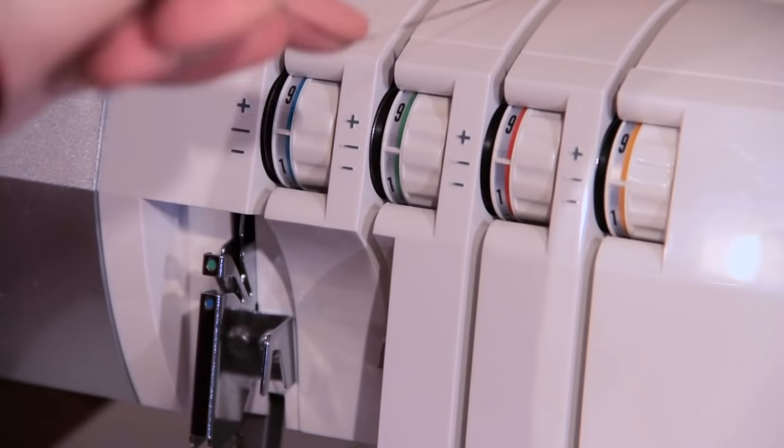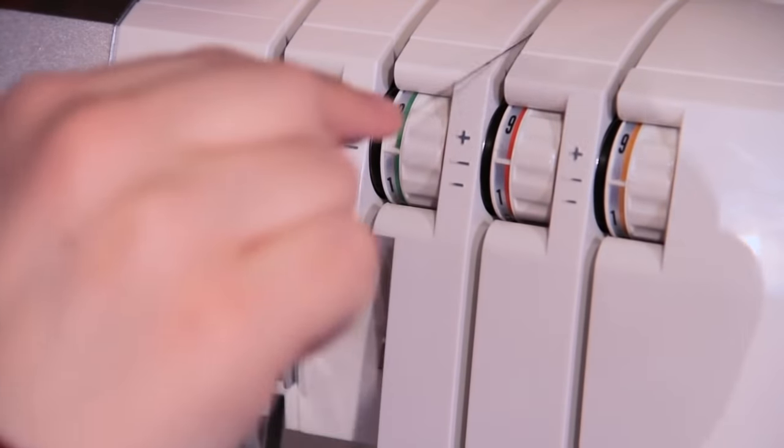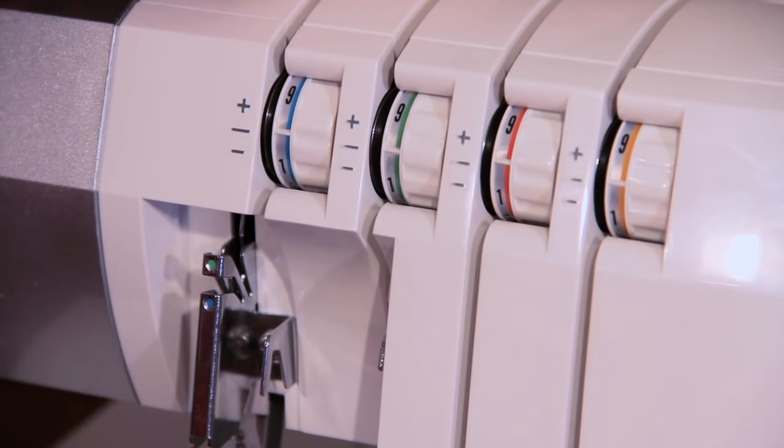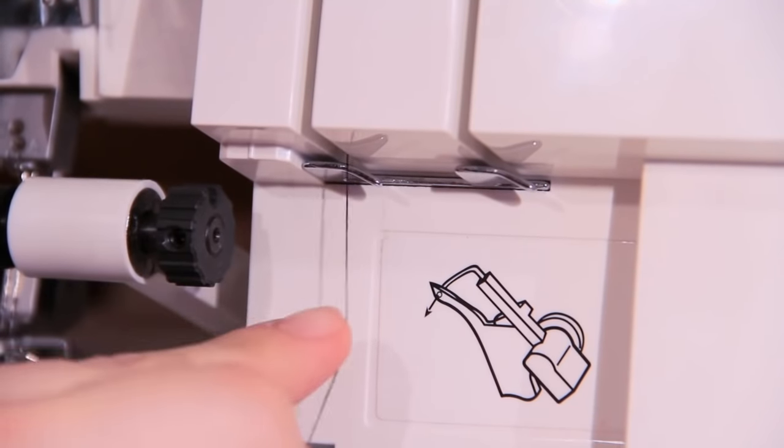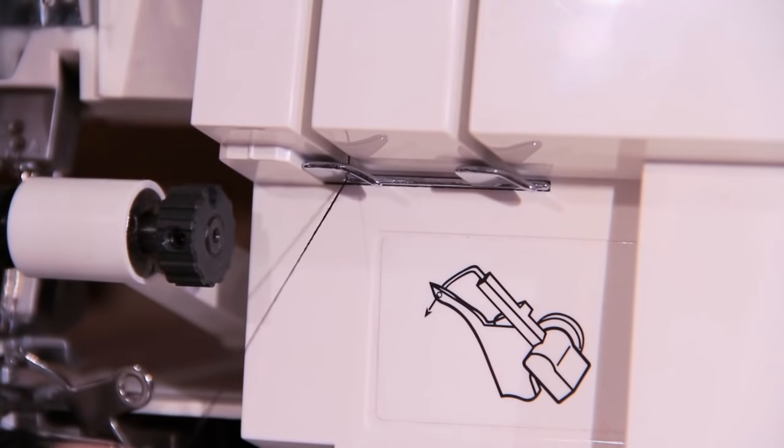Okay, so now this is our upper looper thread. We're going to bring it through the groove and down into the tension disc because you can see we're flossing it in there really well. Pass the upper looper thread through the tiny little metal hook you see right in front of you. Go ahead and pop it in there.